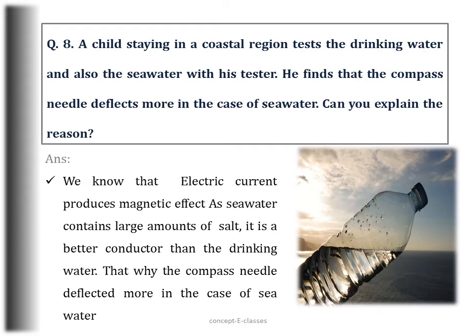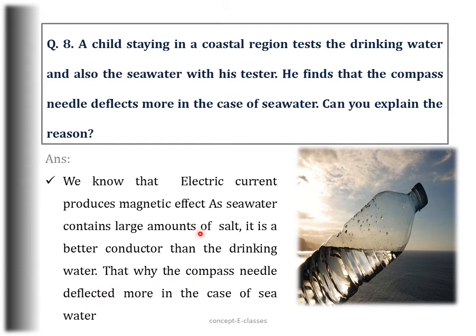Question number 8: A child in a coastal region tests drinking water and sea water with a tester. He finds that the compass needle deflects more in the case of sea water — explain the reason. We know that electric current produces a magnetic effect, and sea water contains large amounts of salt. Hence it is a better conductor of electricity than drinking water, which is why the compass needle deflected more in the case of sea water.